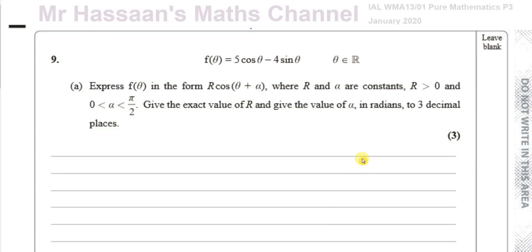Welcome back to Mr. Hassan's Maths Channel. This is a video where I'm going to explain question number 9 from the January 2020 International A-Level P3 paper. In this question, we have a question about trig identities.